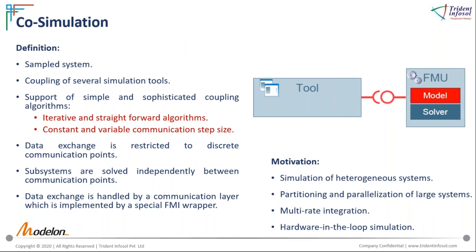In Co-simulation, the FMU contains details of both the model and the solver. The intention is to couple two or more simulation tools in a co-simulation environment. It supports algorithms from simple to detailed, including variable step size and constant step size. The data exchange between subsystems is restricted to discrete communication points; between two communication points, subsystems are solved independently by their individual solvers. A master algorithm controls data exchange through a communication layer implemented in a unique wrapper called the FMI wrapper. Co-simulation also supports heterogeneous large systems, parallelization, multi-rate integration, and hardware-in-the-loop simulations.